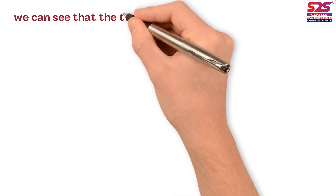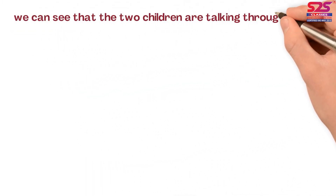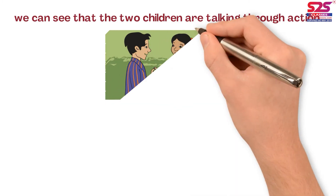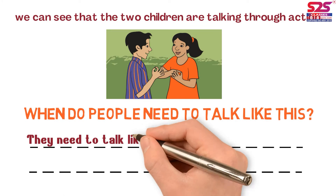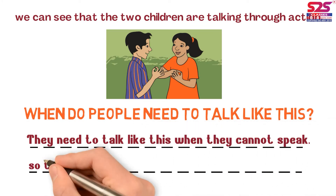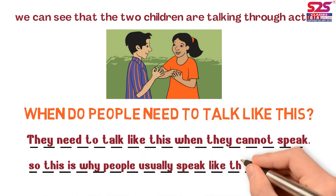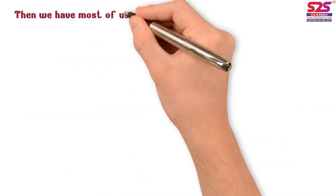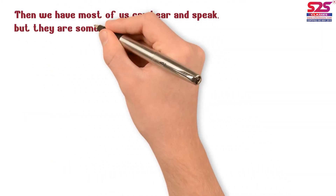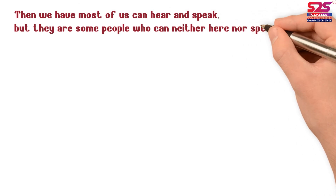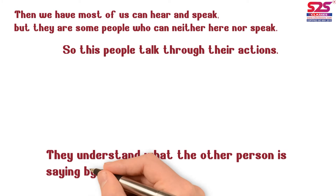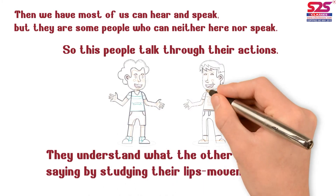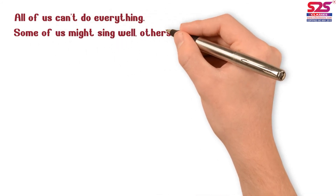We can see that two children are talking through actions. People need to talk like this when they cannot speak. Most of us can hear and speak, but there are some people who can neither hear nor speak. These people talk through their actions, and they understand what the other person is saying by studying their lip movements.